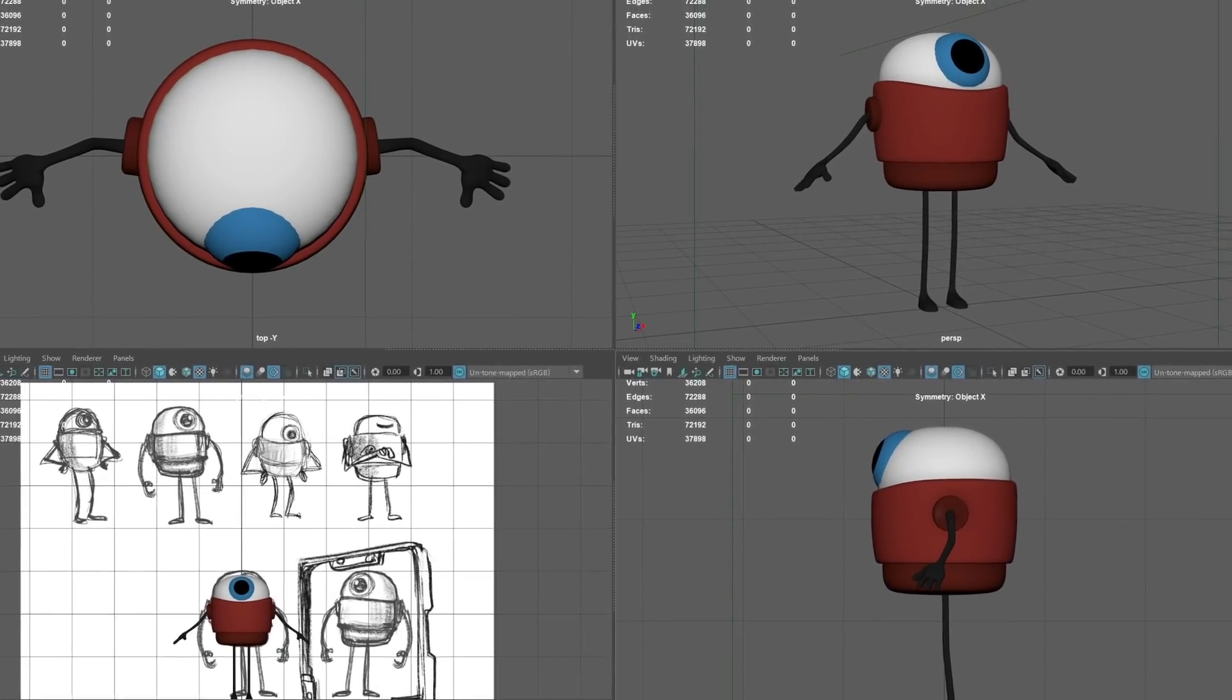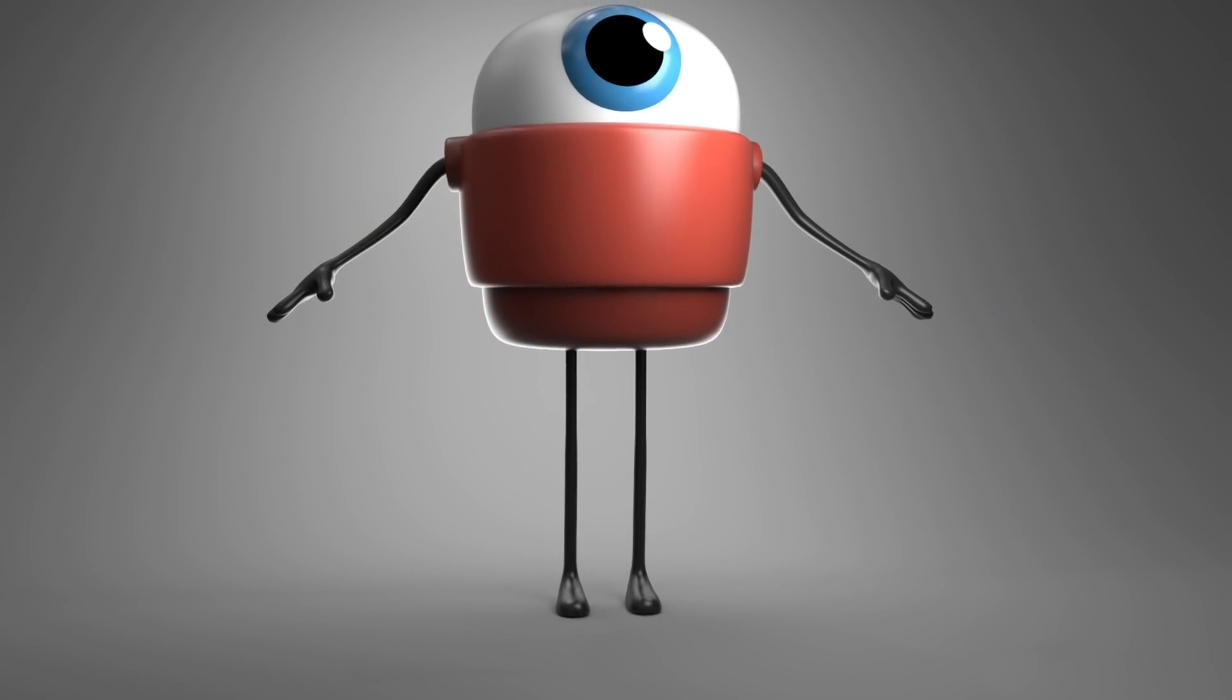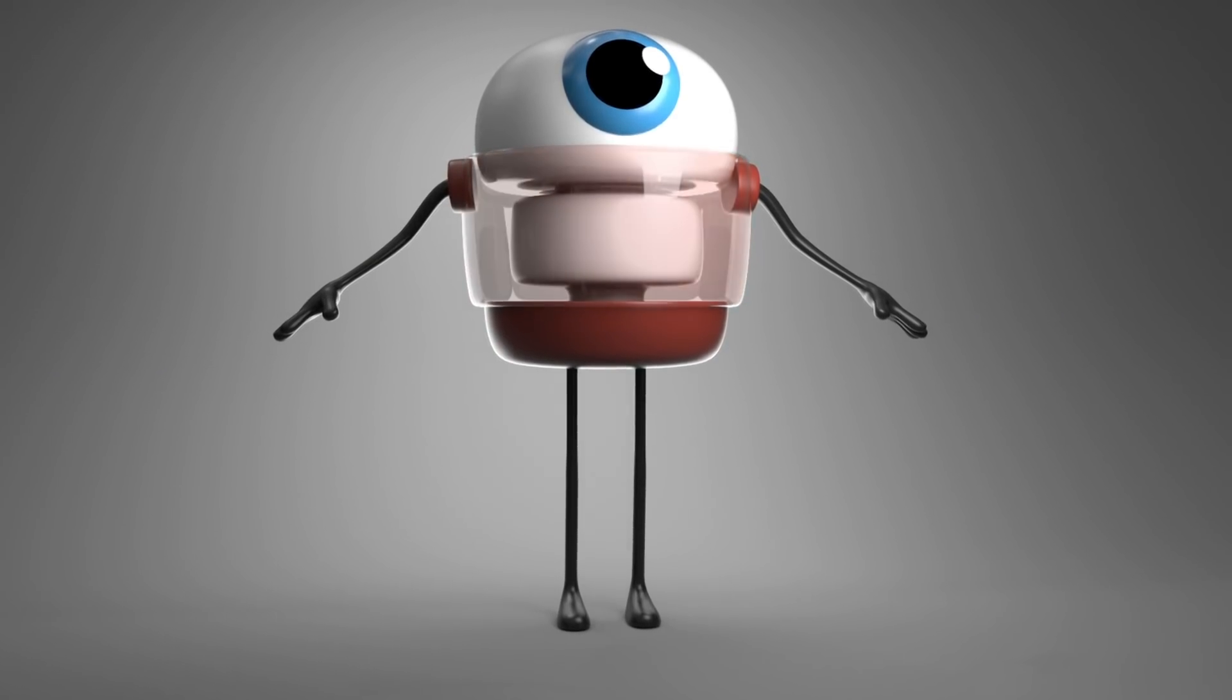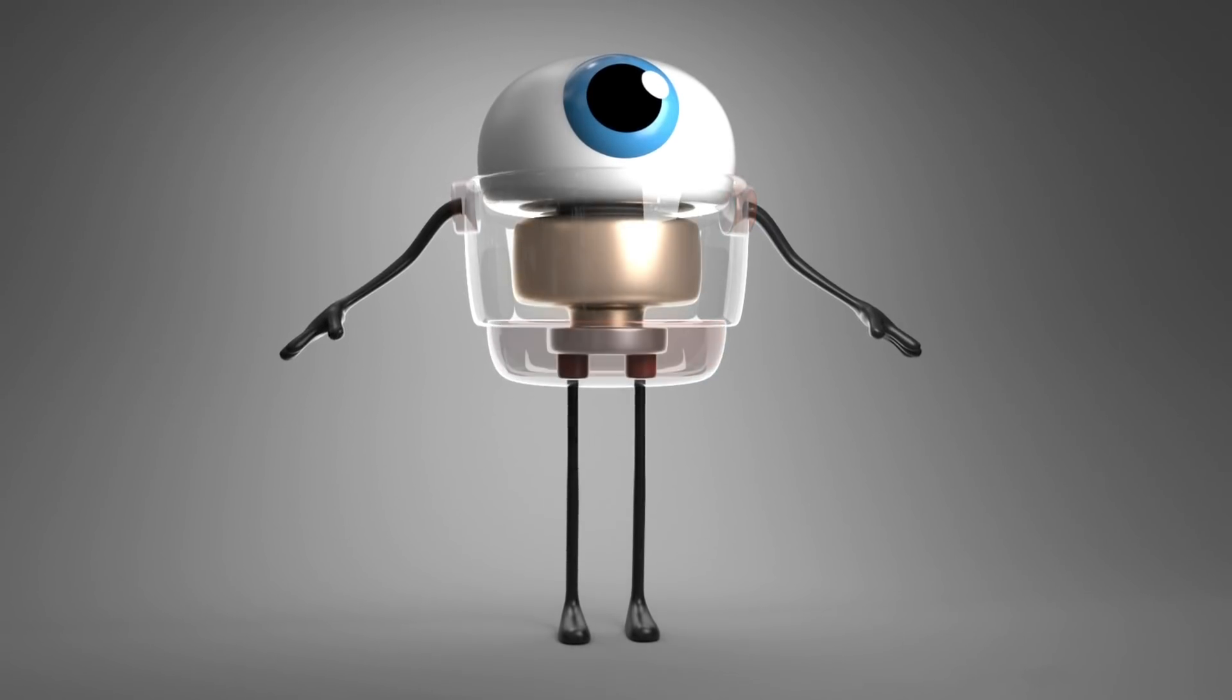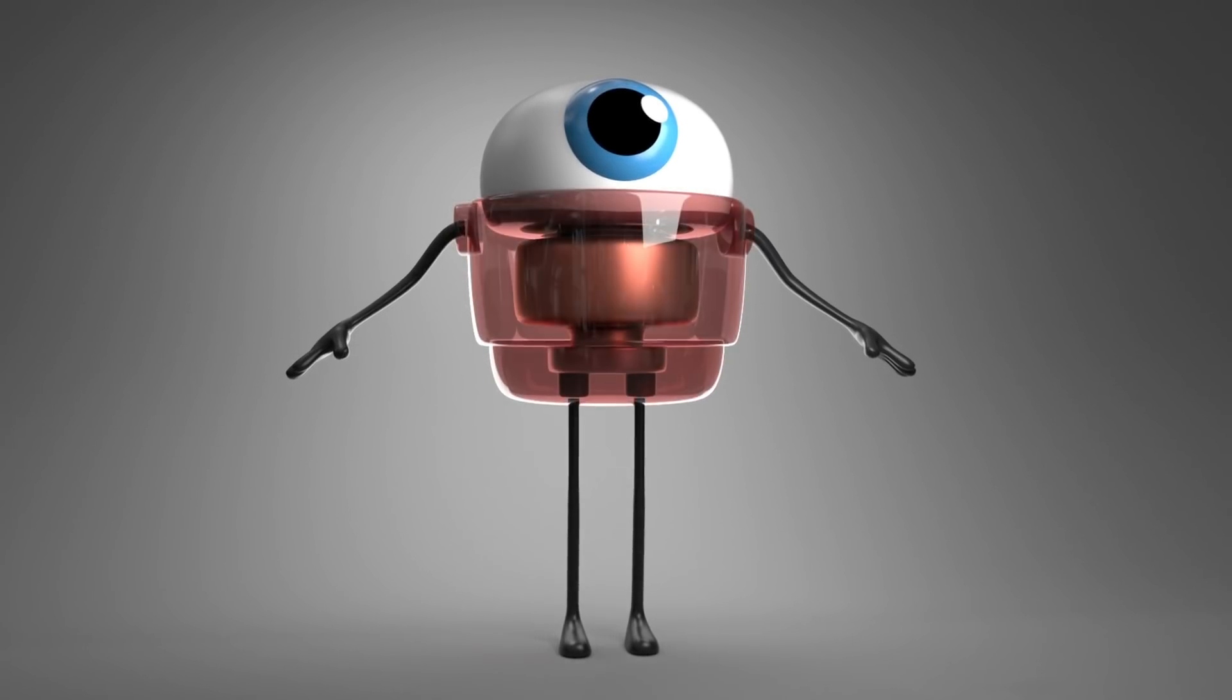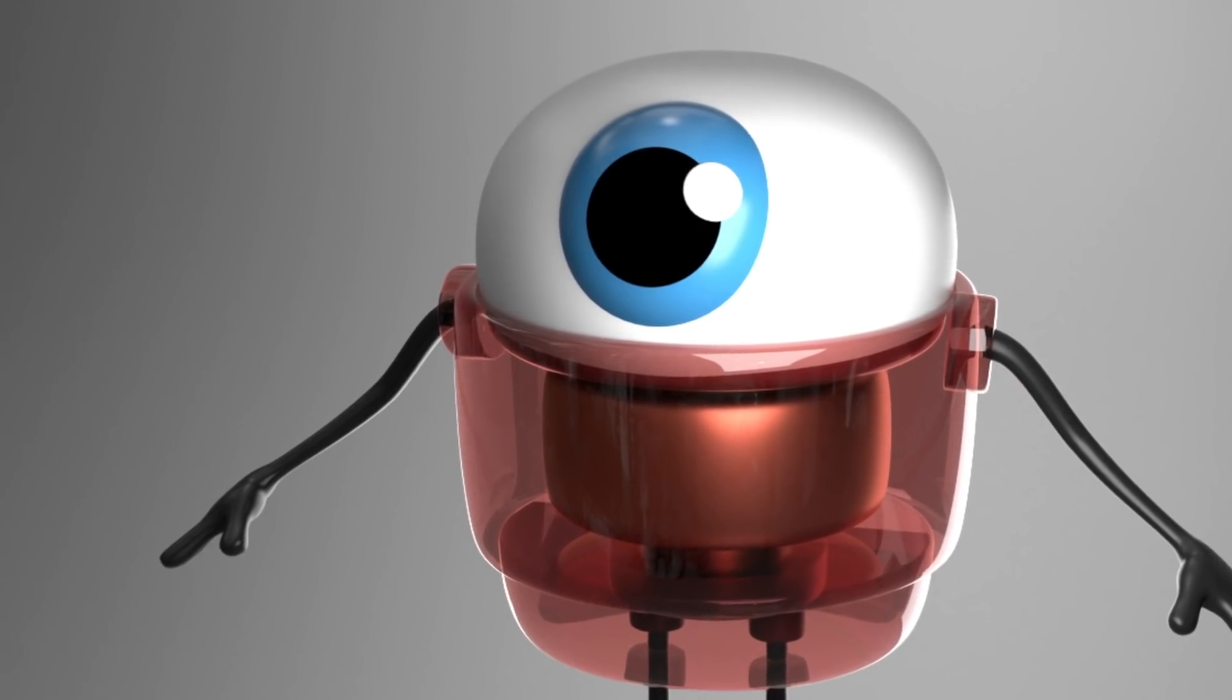For the cell, I wanted it to be a small, simple character that exhibited a playful personality. Introducing elements of anthropomorphism, the cell is essentially a giant eyeball with arms and legs.